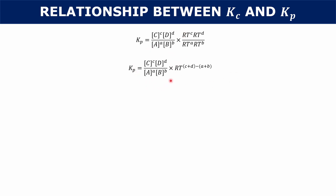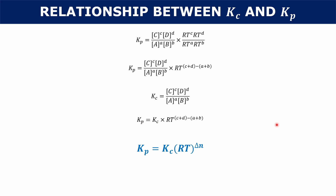Now that concentration part should look familiar — your Kc is exactly that: concentration of C to the c, times D to the d, over A to the a, times B to the b. So we can replace that entire expression with Kc. What we have is that Kp equals Kc times RT to the quantity c plus d minus a plus b. And at this point we basically have the final equation: Kp equals Kc times RT to the delta N, where delta N is the sum of your product coefficients minus the sum of your reactant coefficients. We use delta N just to make things a little neater.